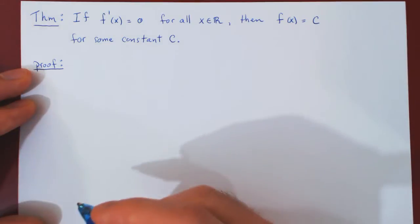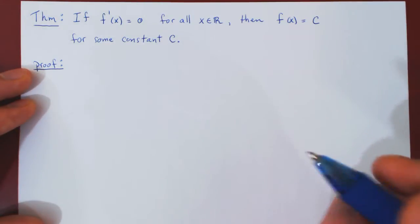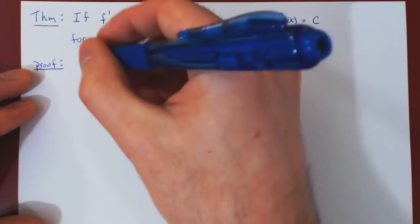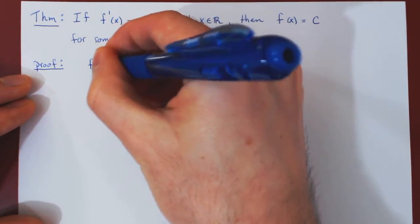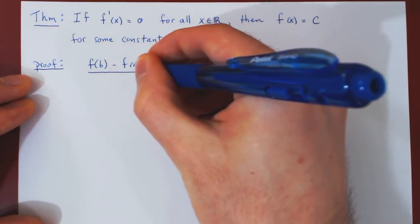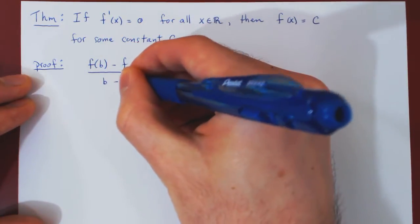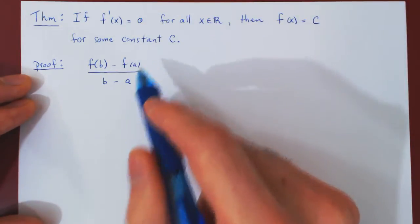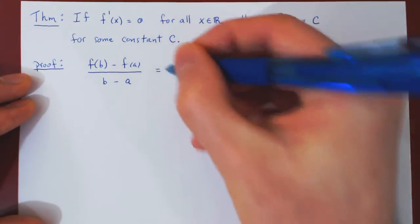By the mean value theorem, if we take two different points a and b, we have that f of b minus f of a over b minus a,